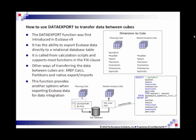So here's a typical example. In this example you have two cubes. One's a planning cube that has all your dimensions and one's a market analysis cube. In that cube you really don't need the product dimension, so that one's dropped.